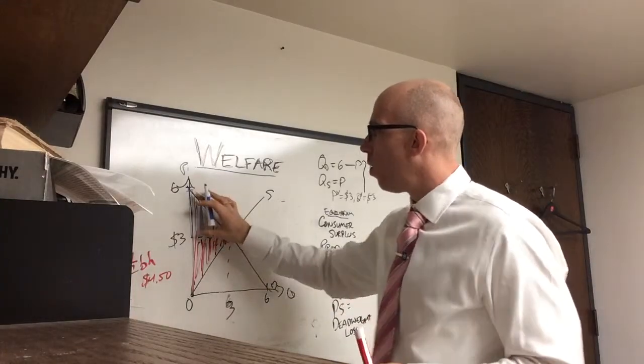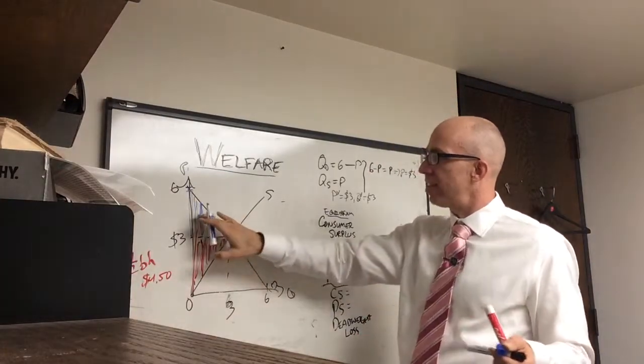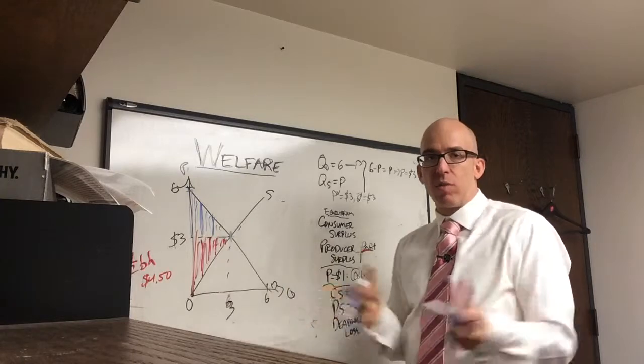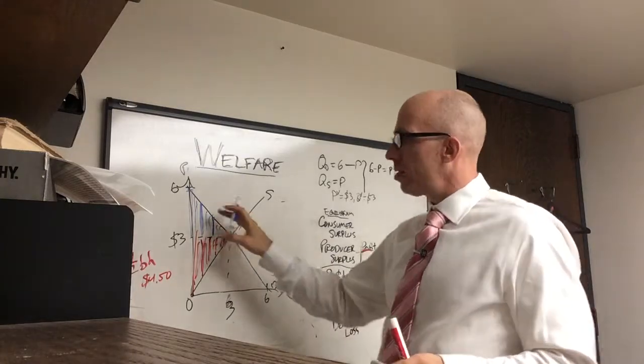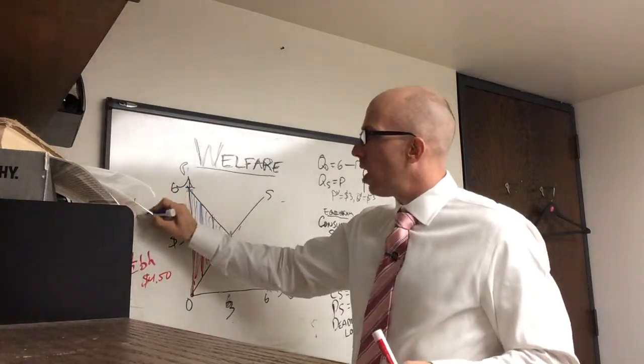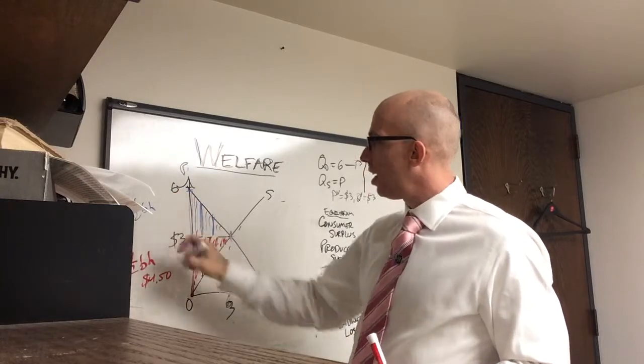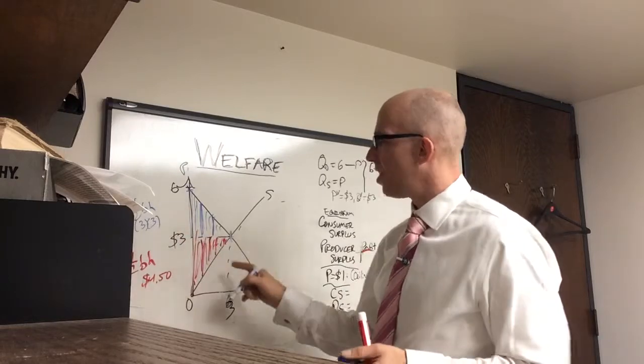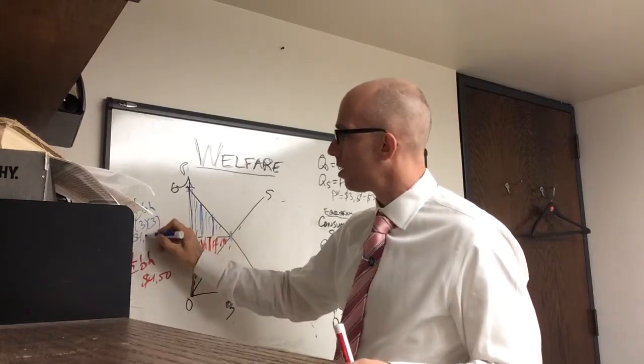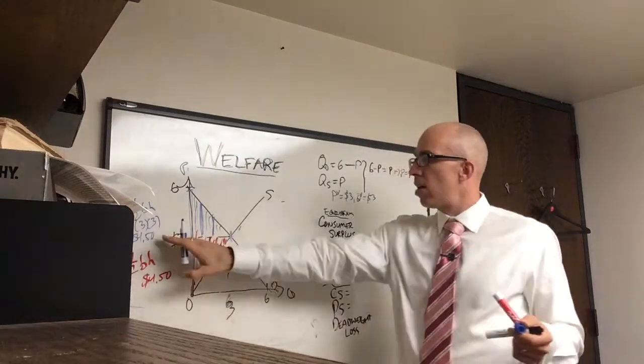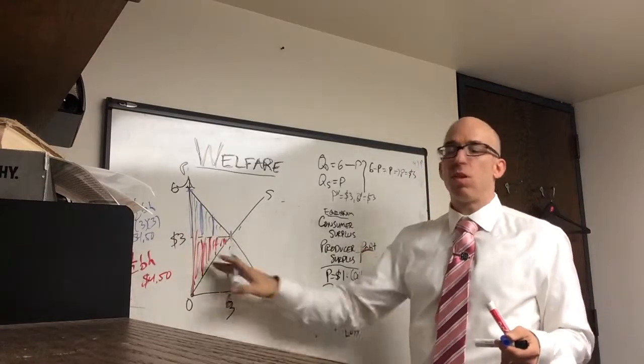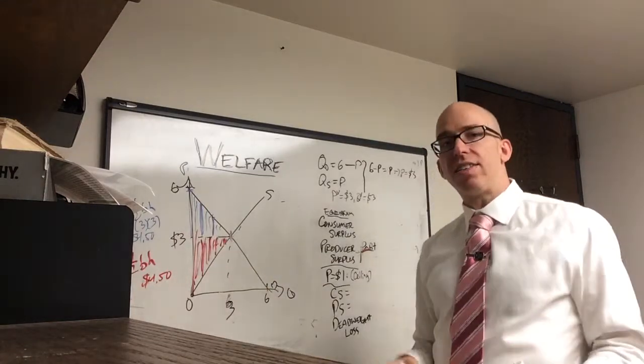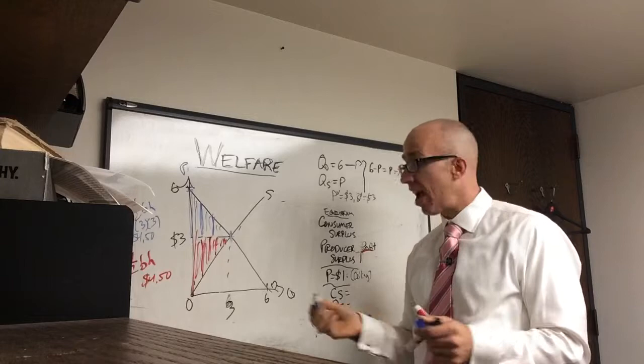So this whole triangle is the entire buying group of consumers happiness due to buying the product. So 1.5 base times height as well is 1.5 times 3 times 3. And then you can actually say that this too is $4.50. So this is $4.50 for consumers, $4.50 for producers, and then the entire world is $9.